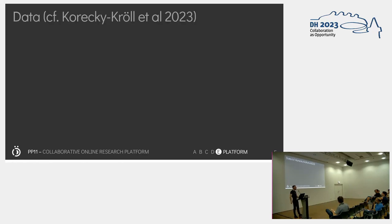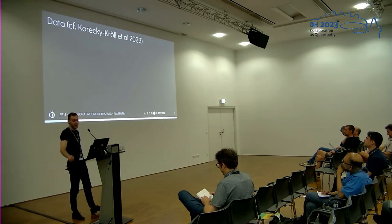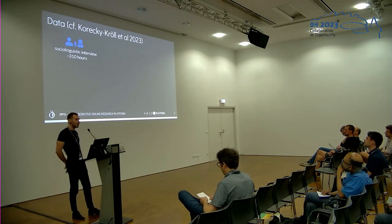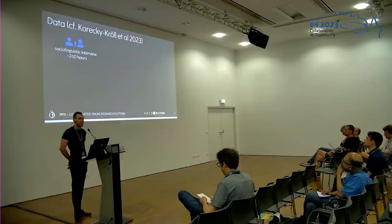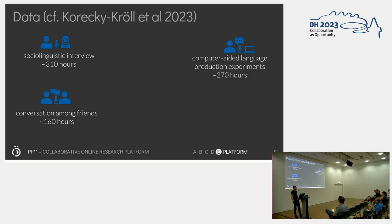Very important for our purpose is the data used and gathered by this research project, focusing on language recordings. One part is the traditional sociolinguistic interview, where we have approximately 310 hours in our database. Conversation among friends — two informants talking without a researcher present — is roughly 160 hours. We furthermore have computer-aided language production experiments, where informants watch a stimulus on a computer and respond, roughly 270 hours, and then we have oral questionnaires.